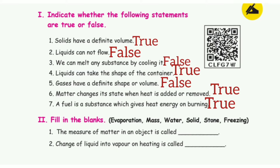3. We can melt any substance by cooling it. The answer is false. 4. Liquids can take the shape of the container. The answer is true. 5. Gases have definite shape or volume. The answer is false.